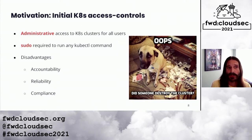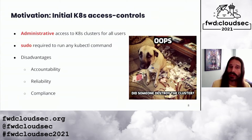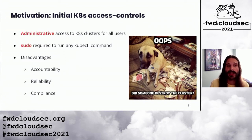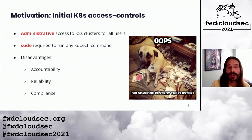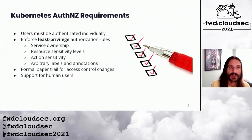With everyone sharing credentials, when something like that happens it can be really difficult to understand exactly who performed which actions in the cluster. This also complicated our compliance narratives, and we had to do strange things to overcompensate — like creating completely separate bespoke Kubernetes clusters for sensitive workloads, which is obviously not ideal. So it was very clear that we needed to introduce some fine-grained role-based access control.